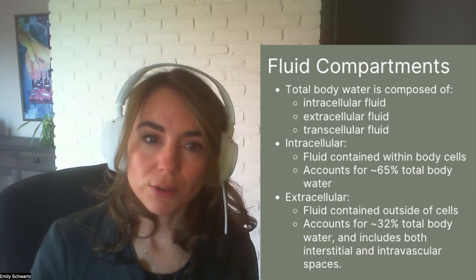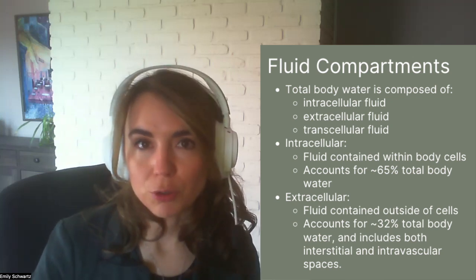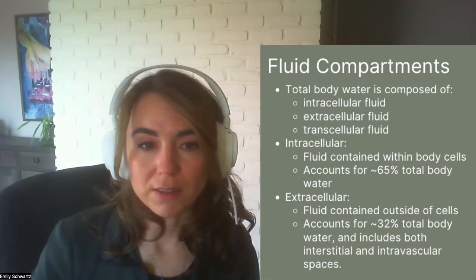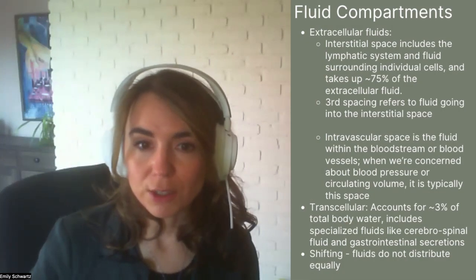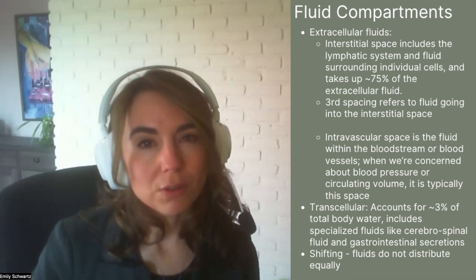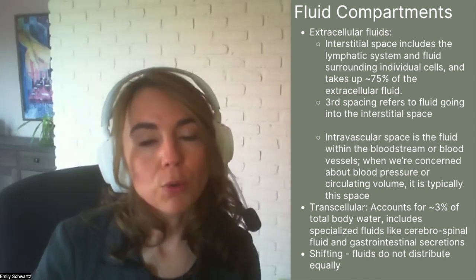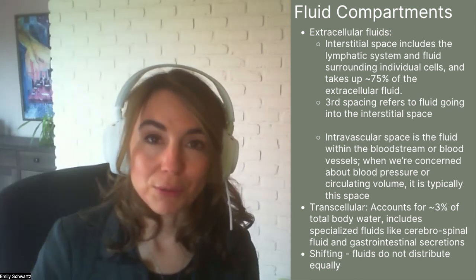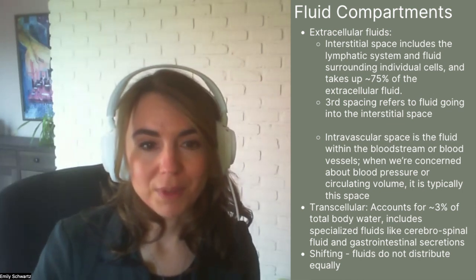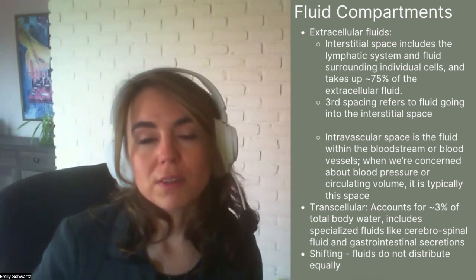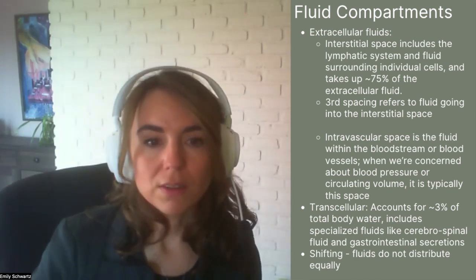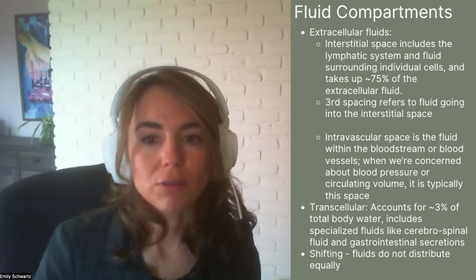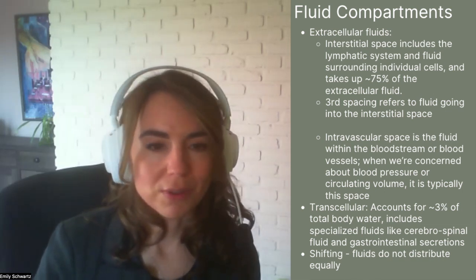We also have the extracellular fluid compartment, which accounts for about 32% of total body water, and includes both the interstitial and intravascular spaces. The interstitial space includes the lymphatic system and the fluid surrounding individual cells, taking up about three quarters of the extracellular fluid. When we talk about third spacing, fluid is going to this interstitial or third space. The intravascular space is the fluid within the bloodstream, which is what we're concerned about when talking about blood pressure or circulating volume.